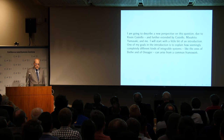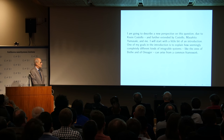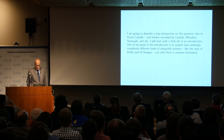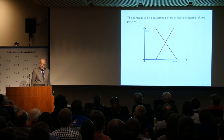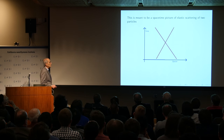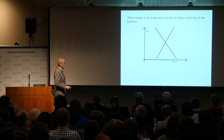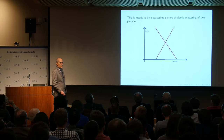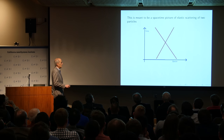I want to start with a little introduction to integrable systems. One goal is to explain how a common framework underlies seemingly completely different kinds of integrable systems. I'm going to start with scattering of particles in one space, one time dimension. This is meant to be a space-time picture: time runs vertically and space runs horizontally. A particle moving with constant velocity is depicted by a straight line whose slope depends on its velocity.